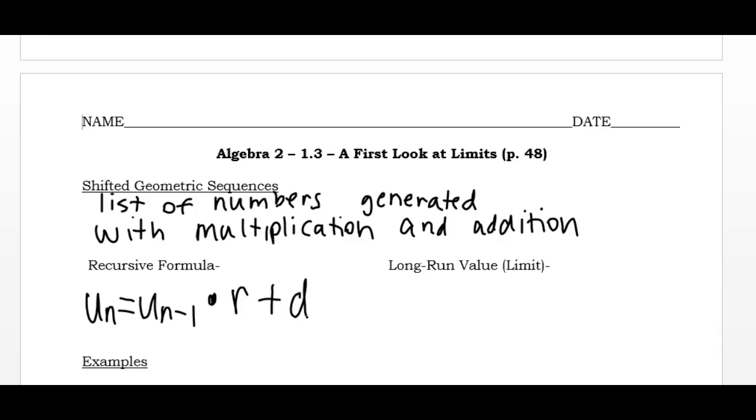Their long-run value would be like, eventually, if we continue this process, the sequence would level out. There's a formula to find the long-run value. And to do that, you would take the common difference divided by one minus the ratio.